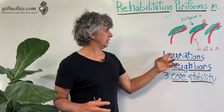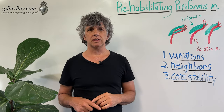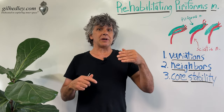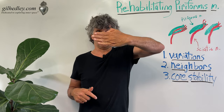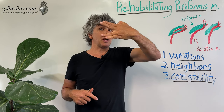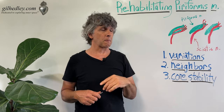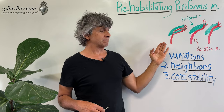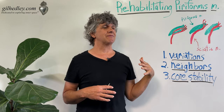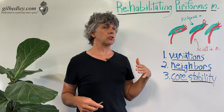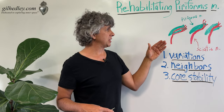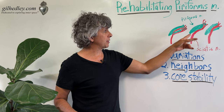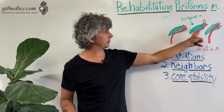Let's talk about the piriformis muscle tissue. It's a variable formation of muscle tissue — sometimes it's a solid thing, and sometimes it's divided. And the sciatic nerve can be in variable relationships to that potential. So most typically, when I dissect the piriformis, it presents this way.